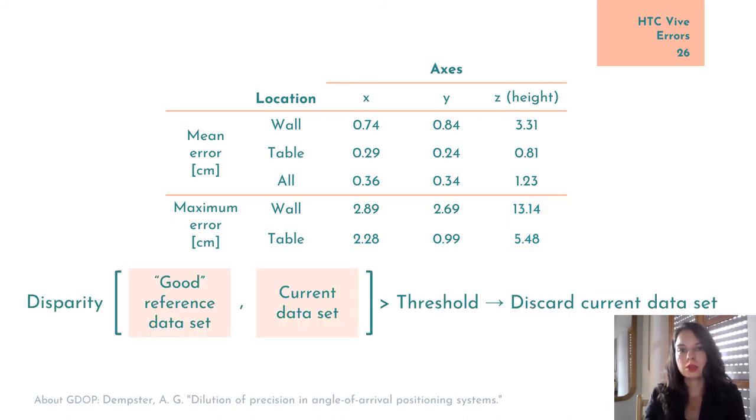To decrease the probability that such large errors go unnoticed, we propose acquiring the reference dataset, meaning the one that all datasets are aligned to, in ideal conditions. This means with little lighting, no reflective surfaces around, optimal coverage of the area, and so on, basically religiously following HTC Vive's guidelines.